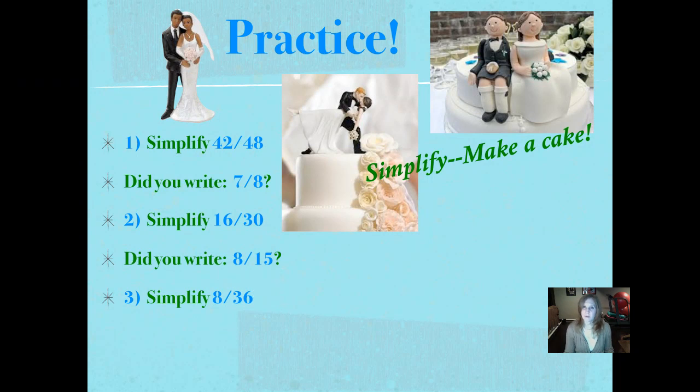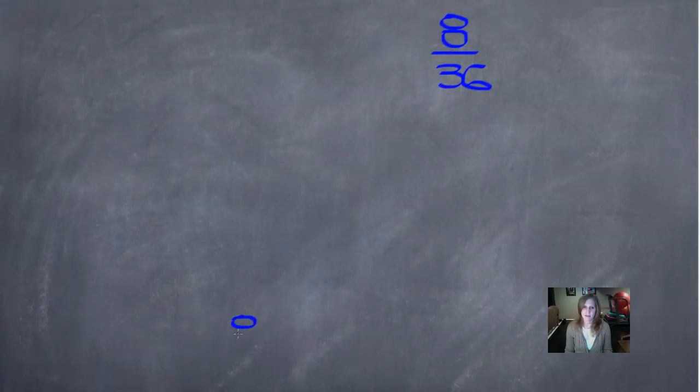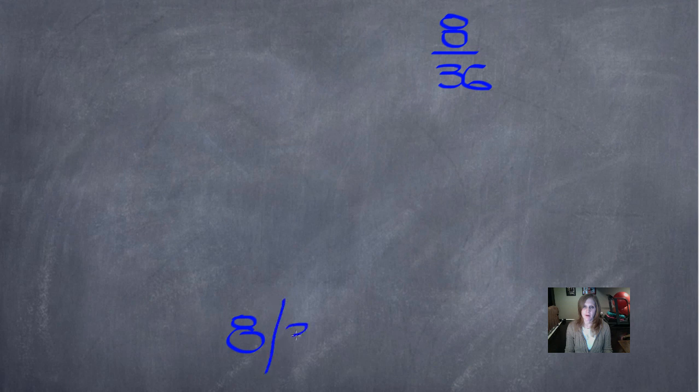Number 3, simplify 8/36. Pause and push play when you're ready. Did you write 2/9? Let's see how we did that one. So we're going to put 8/36 in the very bottom layer of our cake.